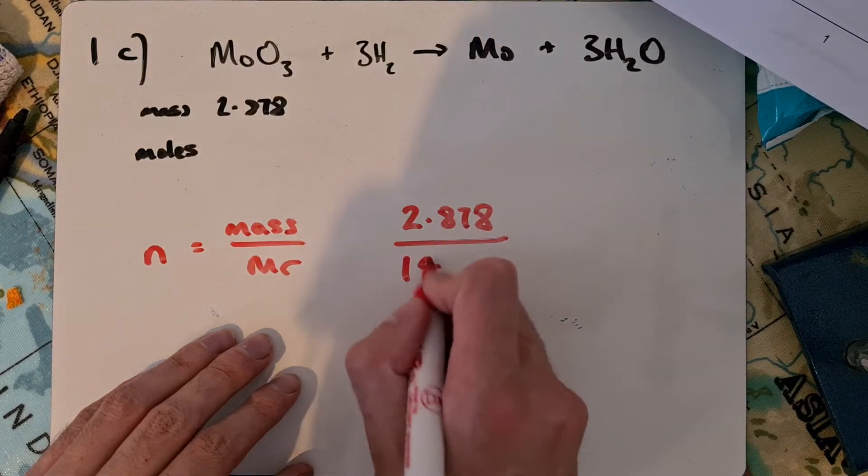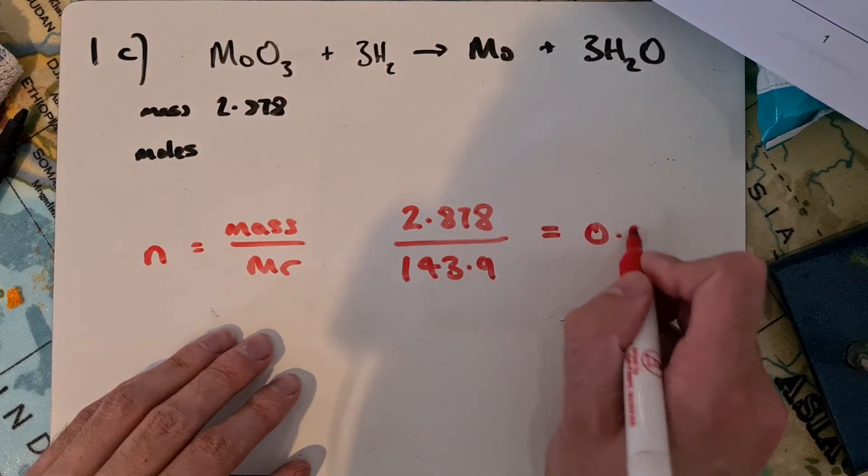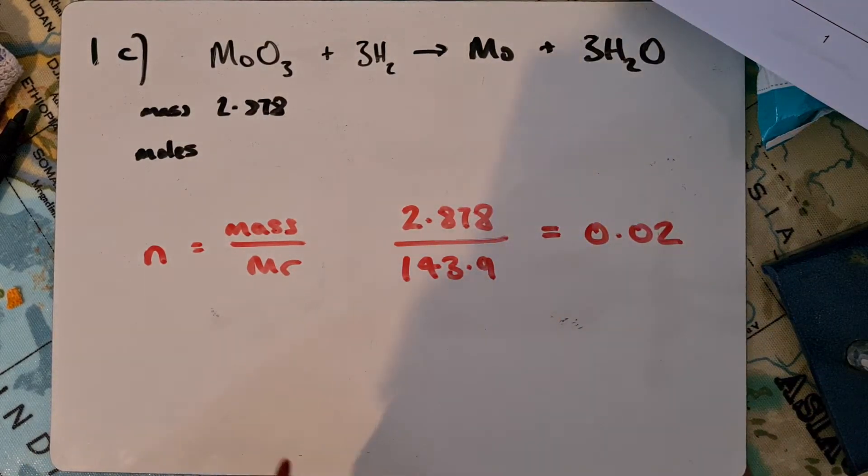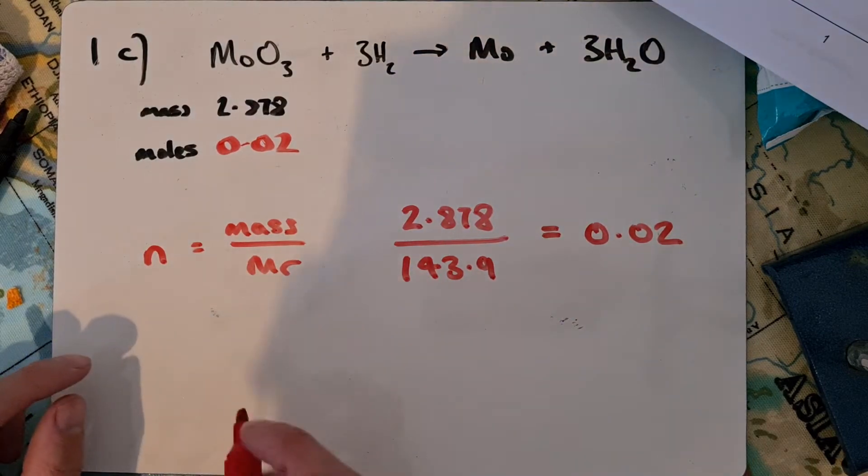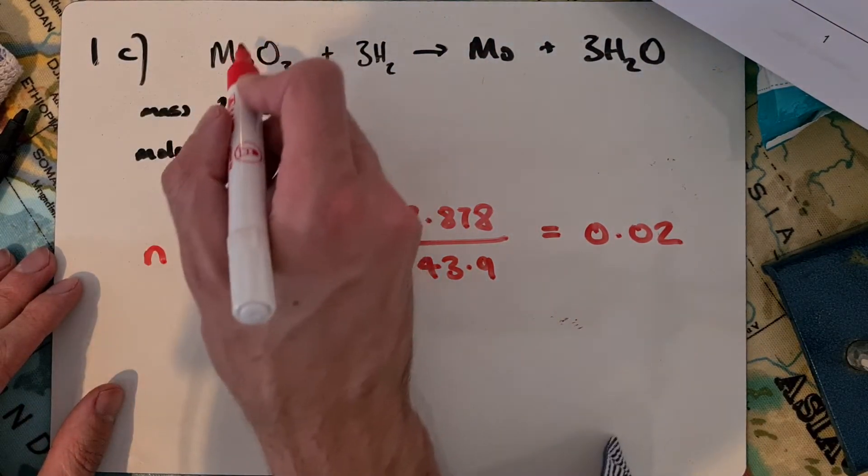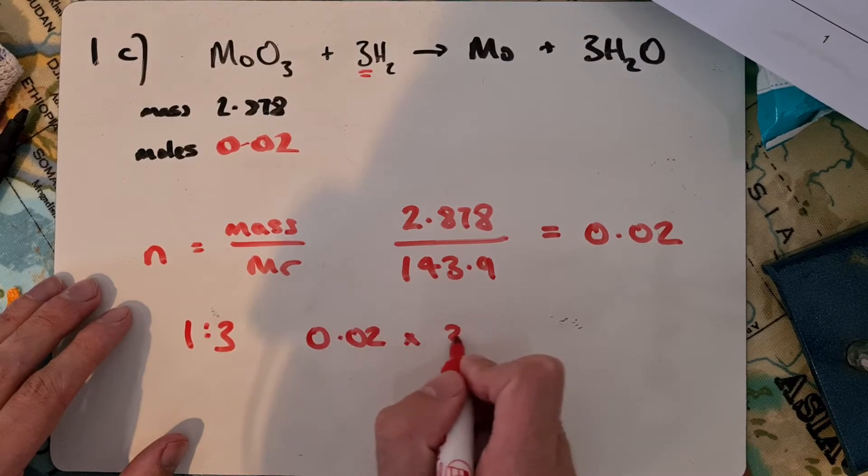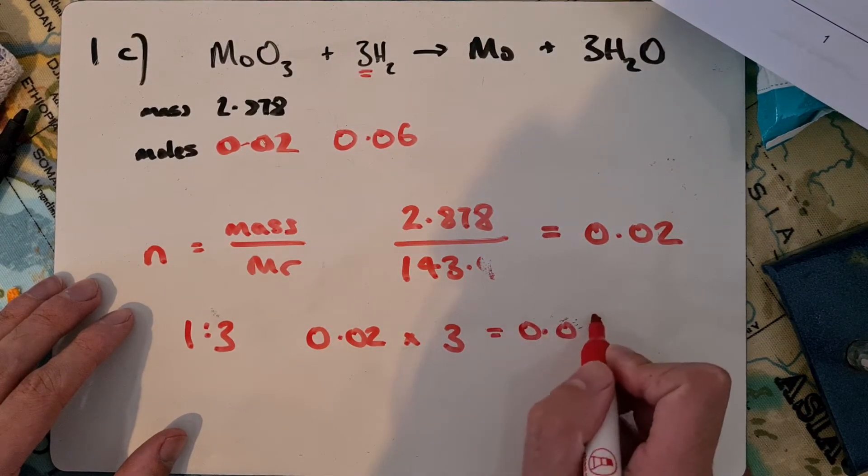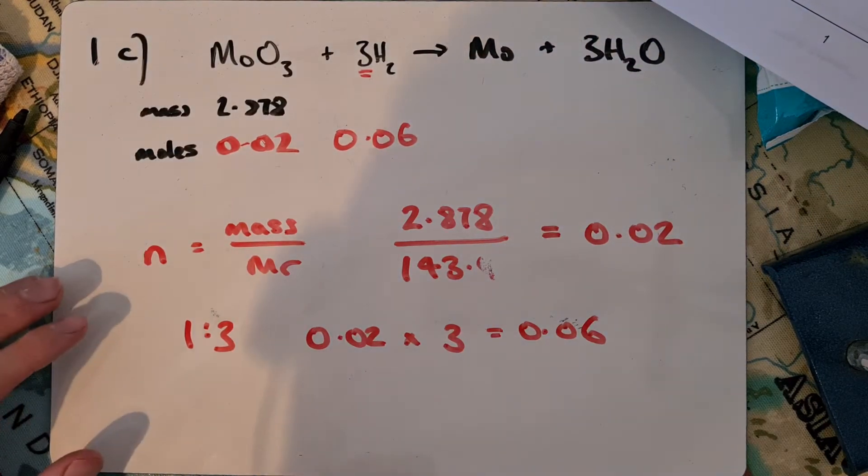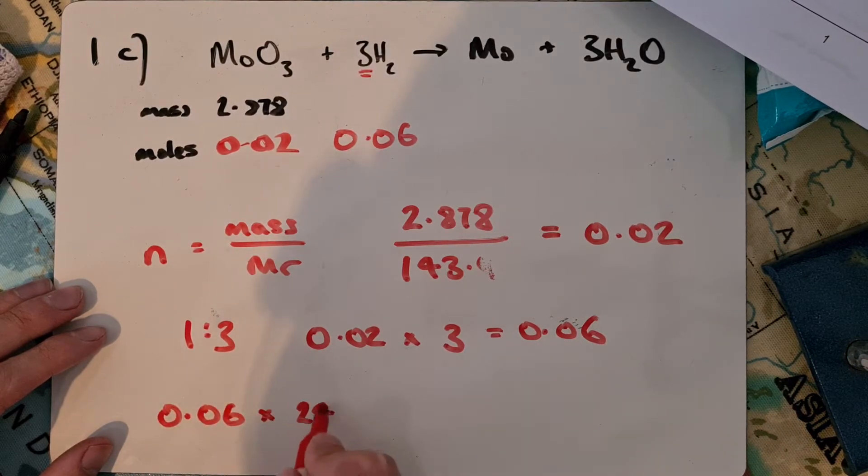The mass is 2.878. If we check our periodic table and work out molybdenum oxide, we get 143.9, and those over each other give us 0.02. Then I can look at the stoichiometry. For every 1 mole of molybdenum oxide, there are 3 moles of hydrogen. So I need to do 0.02 times 3, which gives 0.06 moles for the hydrogen.